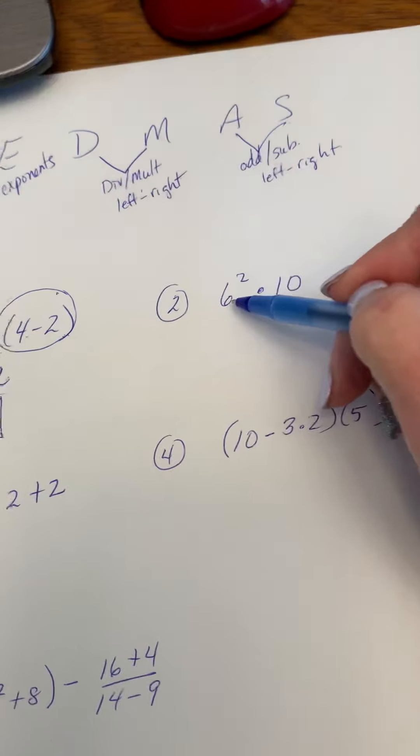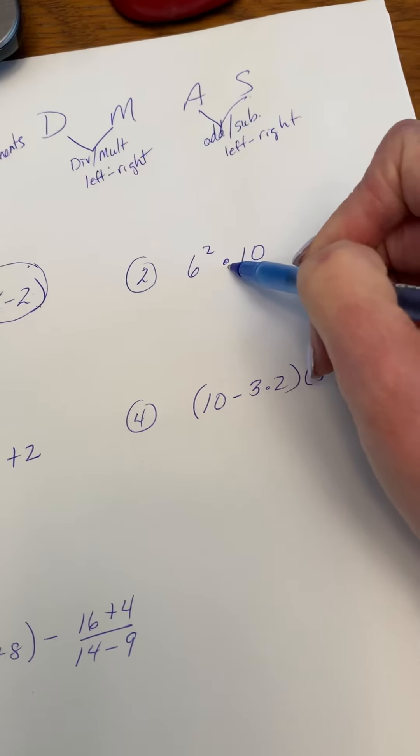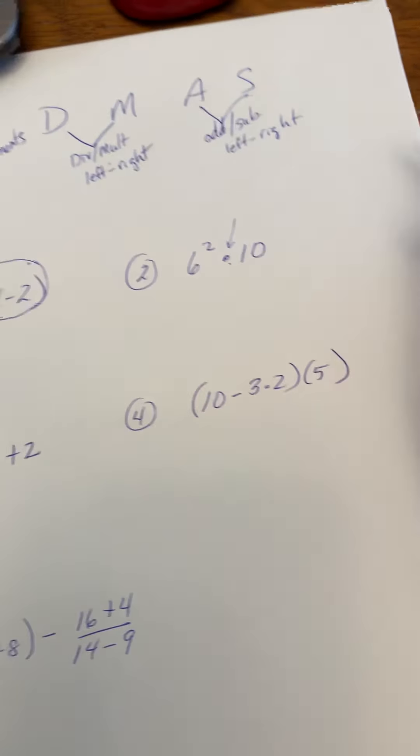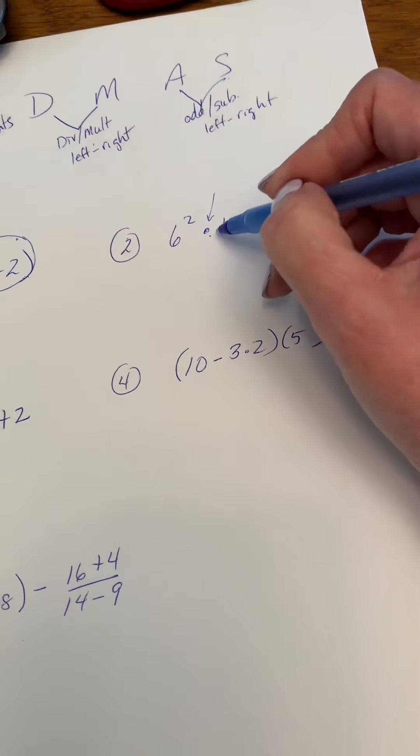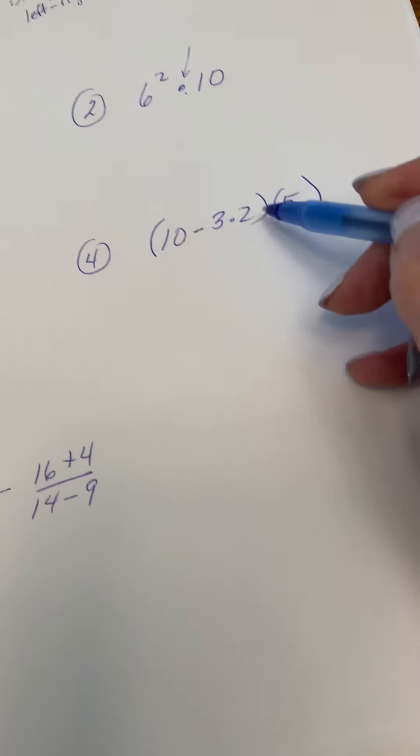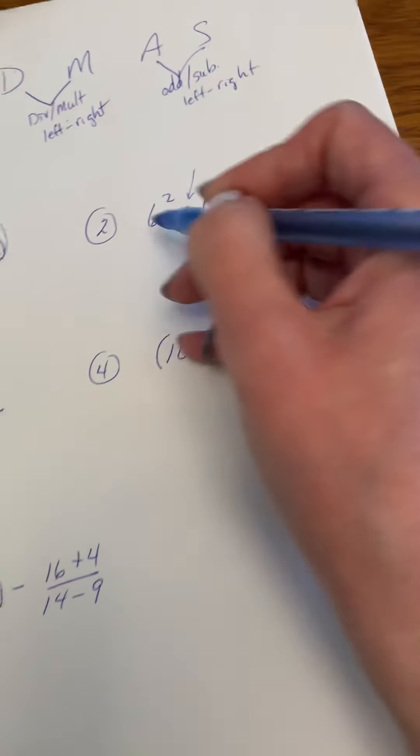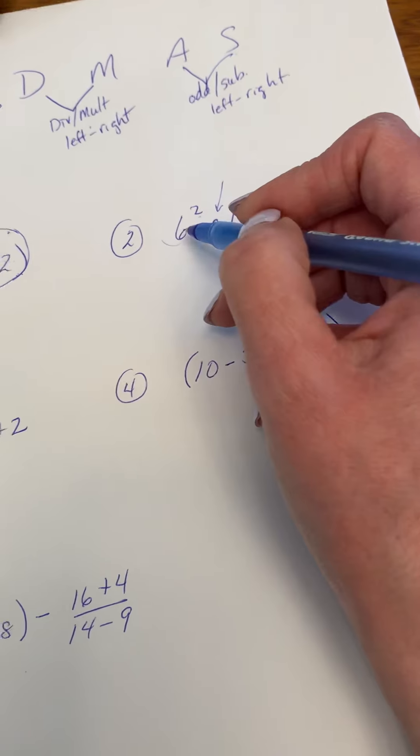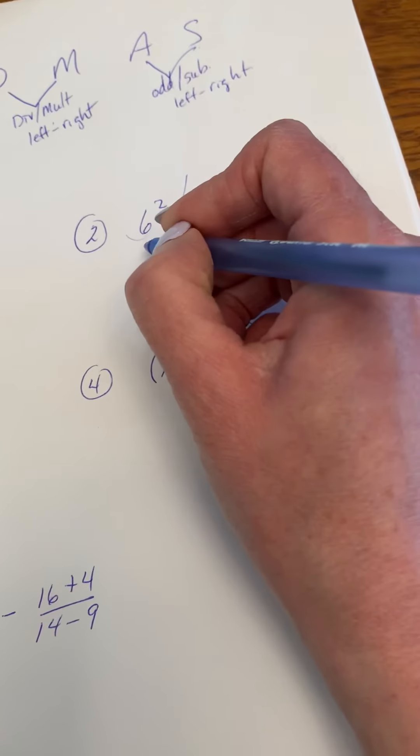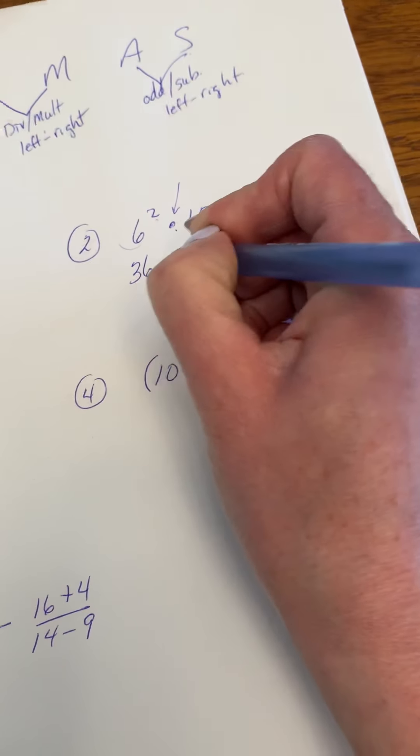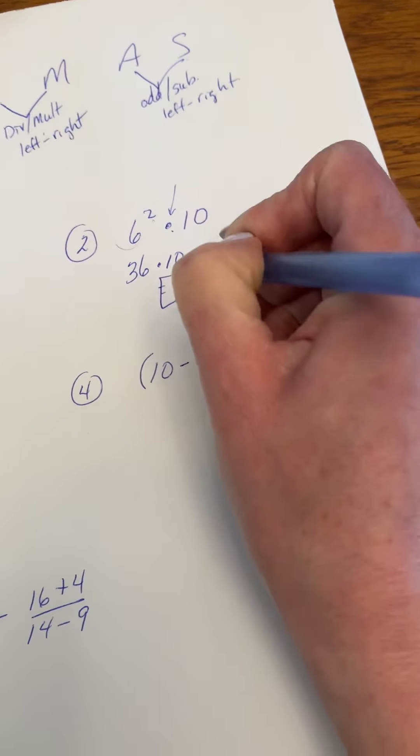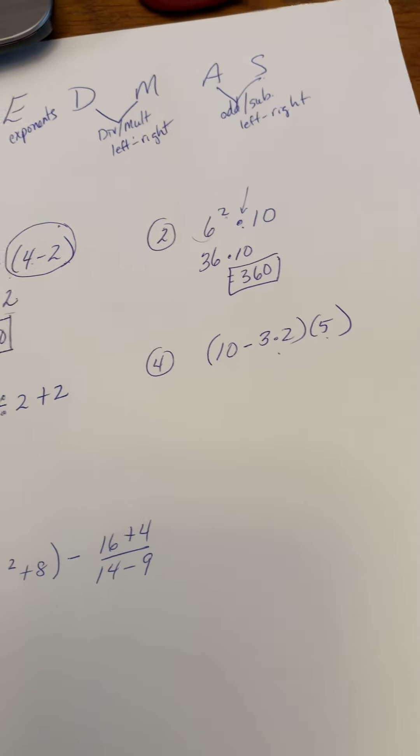The next example is 6 squared, and I want everyone to be introduced to this symbol if you haven't seen it yet in grades 7 and 8. That means multiply, as does brackets side by each like this. So we're going to start with 6 squared, and 6 squared is 6 times 6, remember not 6 times 2, so 36 times 10, and your answer would be 360, and you put it in a nice square like that.